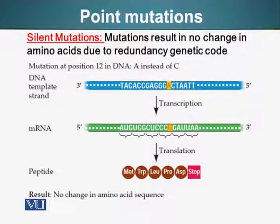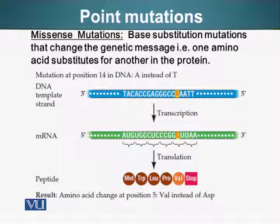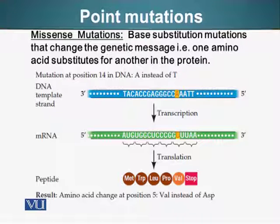There are also missense mutations — base substitution mutations that change the genetic message. When one nucleotide is switched with a different nucleotide, the protein formed as a result of transcription and translation now has a different amino acid than originally intended. In the example shown, a mutation at position 14 in DNA where T is changed to A results in a valine instead of aspartic acid, changing the structure and function of the protein.